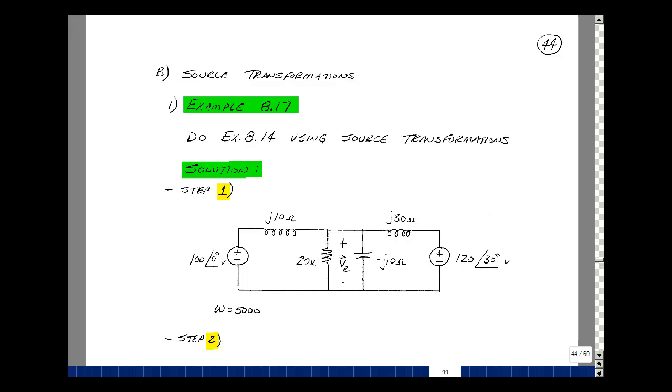This lesson deals with a source transformation example. You can find these notes in the ECE202 ebook in Chapter 8, starting on page 44. Suppose you go back and re-look at Example 8.14. And this time, let's solve it using source transformations in the frequency domain.